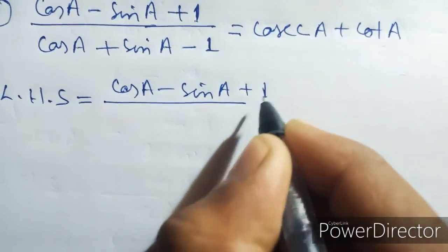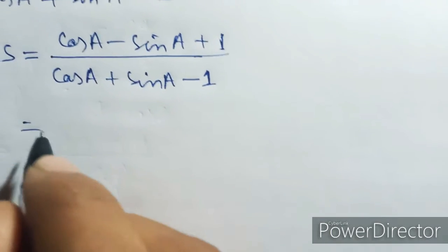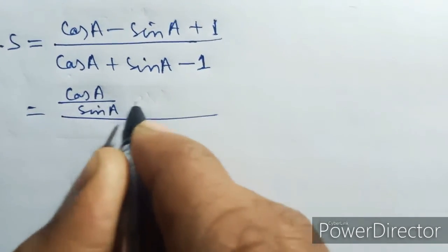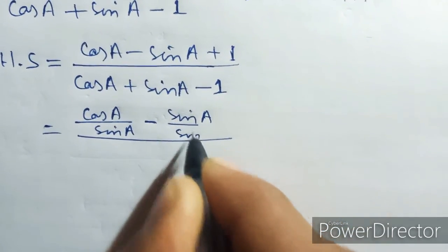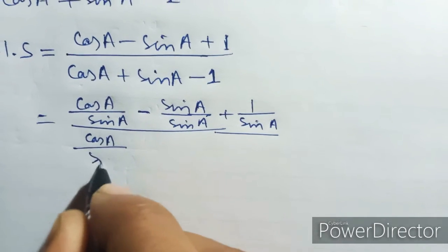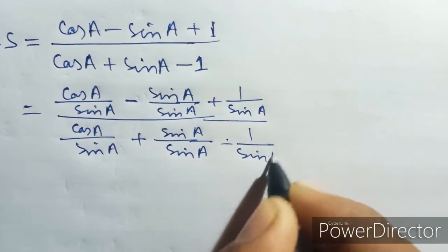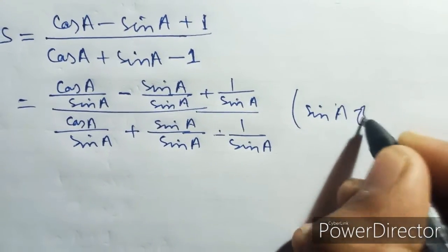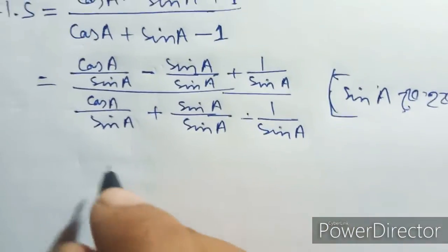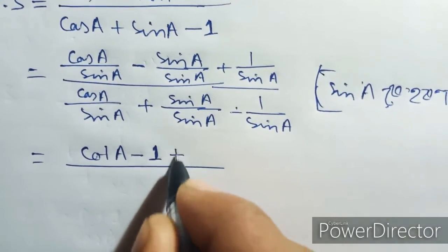Left hand side: minus sine plus one by cosine plus sine minus one. Dividing through by sine: cos i by sine minus sine by sine plus one by sine, and sine plus sine by sine minus one by sine.